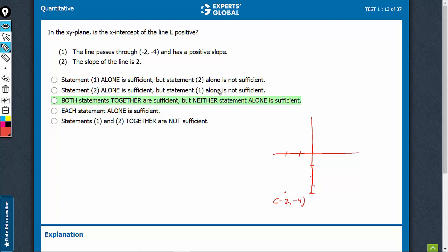So, whether x-intercept is positive, if it is something like this, the line has positive slope and the x-intercept is positive, we are getting yes.